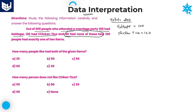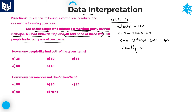One more value is also given: 40 had none of these two — meaning neither Golgap nor Chicken Tikka. And one more value is provided: 100 people had exactly one of the two items, meaning they should not be taking both Golgap and Chicken Tikka together. So exactly one item — 100 members.